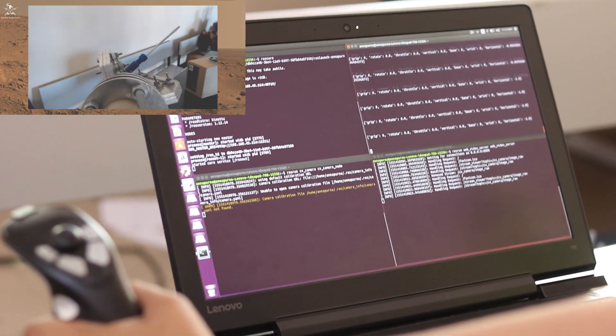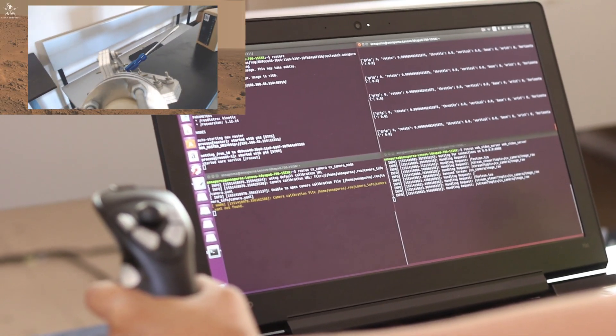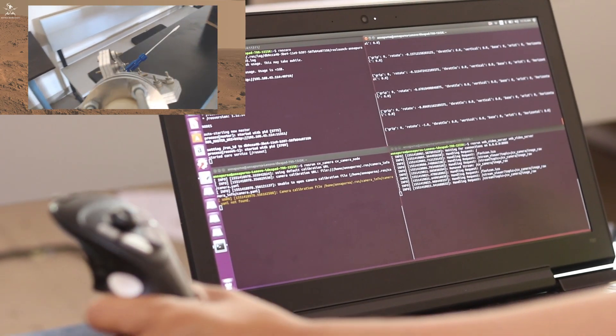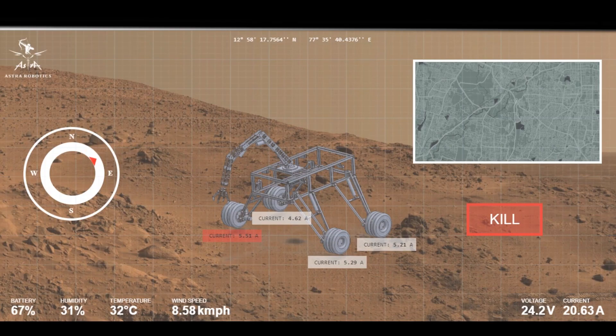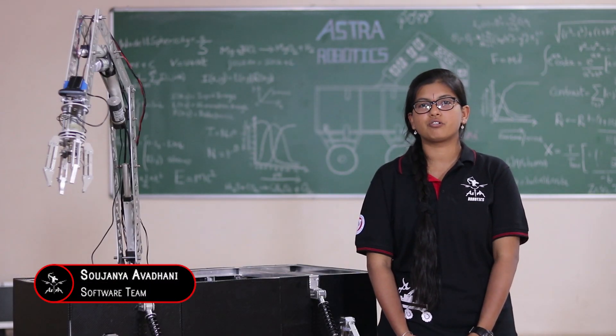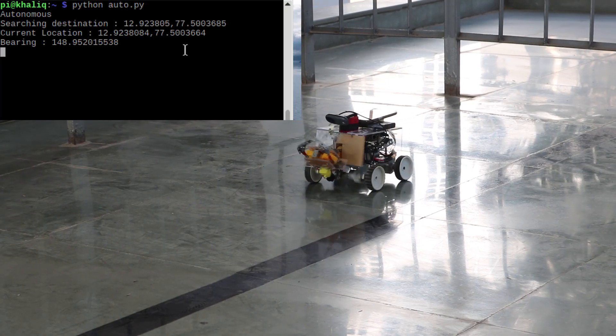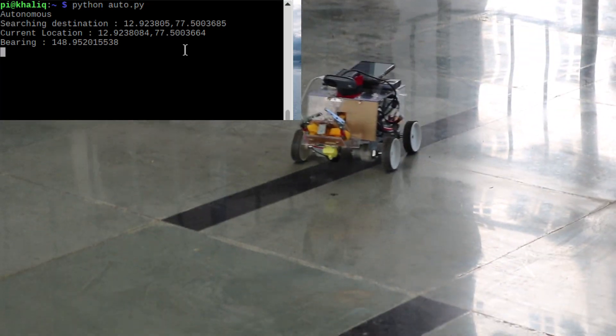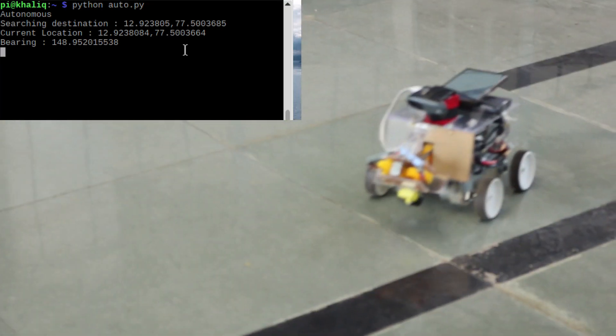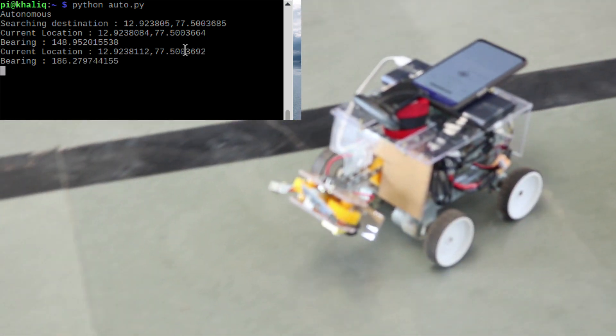We have used ROS to implement reliable and simple communication between the nodes using a publisher subscriber architecture. A live video stream and telemetry is continuously relayed to the base station. The sensors mounted on the rover determine its current GPS position and the course of the rover is updated accordingly to steer it towards the destination using the Haversine formula.